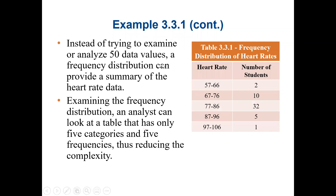The best way to handle this is to organize the data set. Instead of trying to examine all 50 data values, a frequency distribution can provide a summary of the heart rate data. An analyst can look at a table that has only five categories and five frequencies, reducing the complexity of the data set.